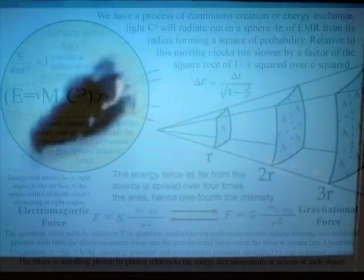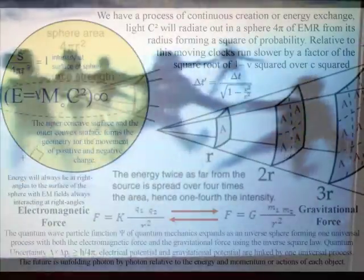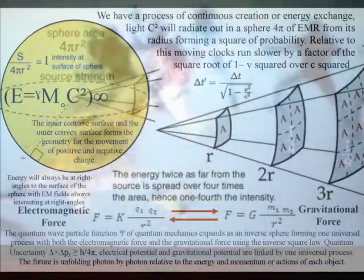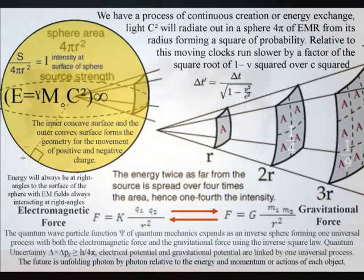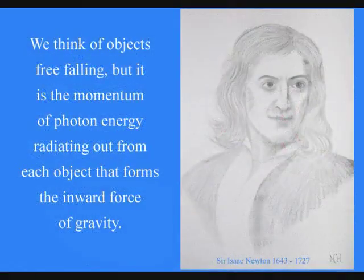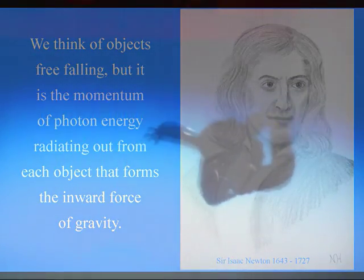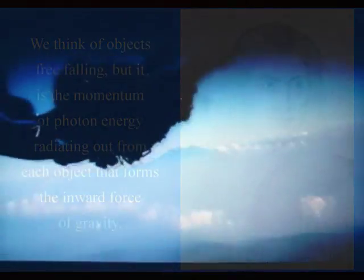The link between the light photon and gravitational fields can be seen mathematically, with both gravitational fields and electromagnetic fields sharing the inverse square law. We think of objects free-falling, but it is the momentum of photon energy radiating out from each object that forms the inward force of gravity.